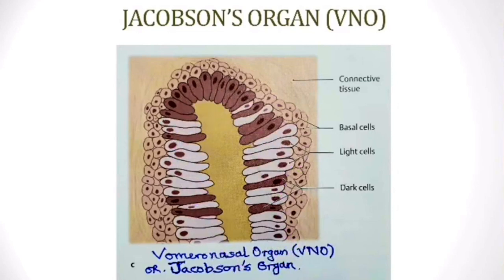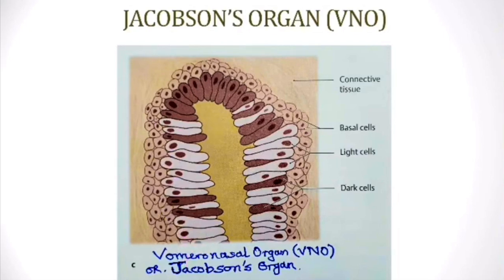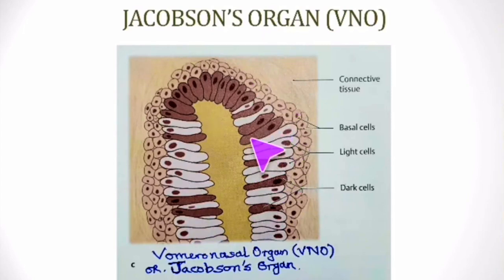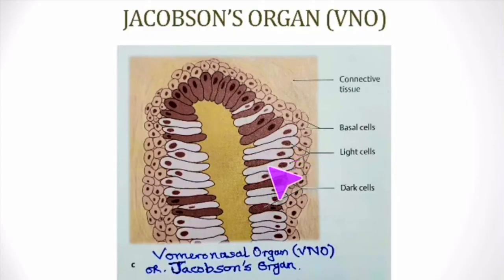Jacobson's organ has not been extensively studied in humans, so its cells are described as dark cells, light cells, and basal cells. The basal cells are progenitor cells for replacement of shed cells. The dark cells are the receptor cells; on their receptor side they have microvilli bearing G-protein coupled receptors that identify pheromones. The chemical signal is transduced into action potentials carried by the terminal nerve (cranial nerve zero) to the accessory olfactory bulb. The light cells are the supporting cells.